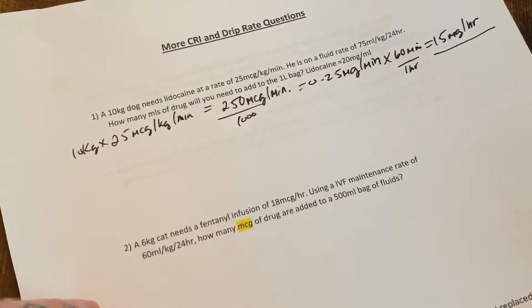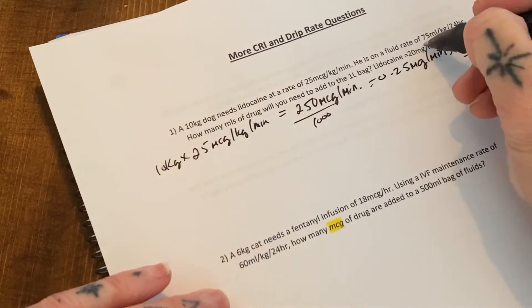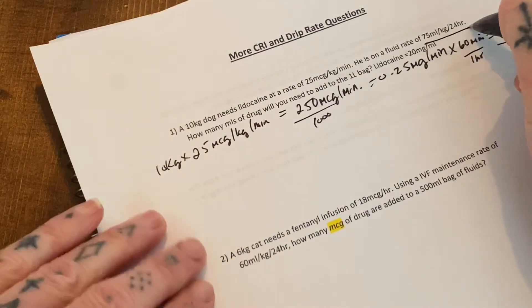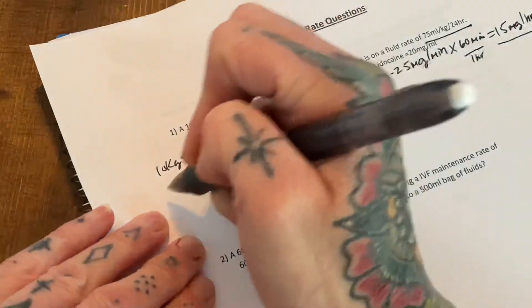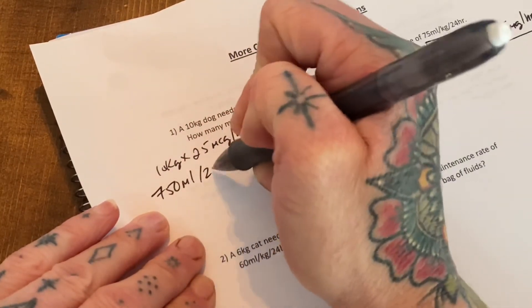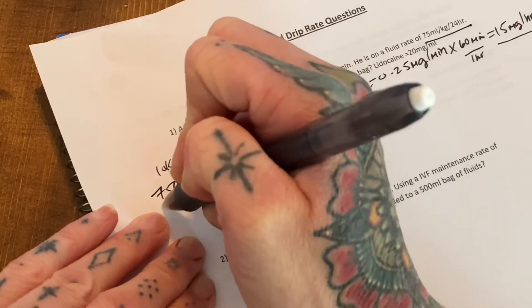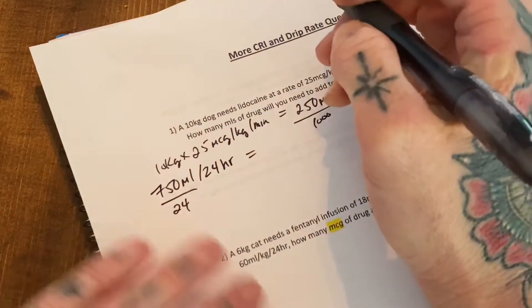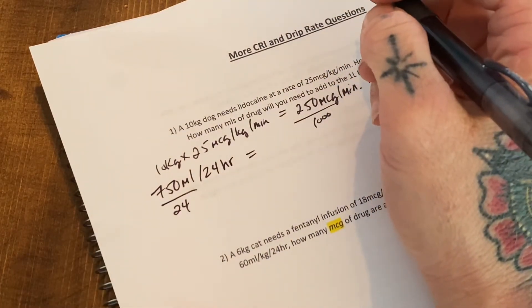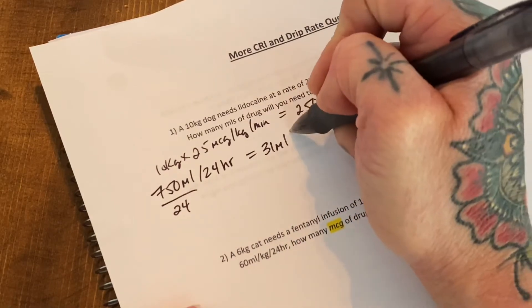So the next part of the question is figuring out the fluid rate. So it's 75 milligrams per kilogram per 24 hours. He's 10 kilograms. So that's 750 mils per 24 hours, which this divided by 24 equals 31.25. So we're just going to say 31 mils an hour.